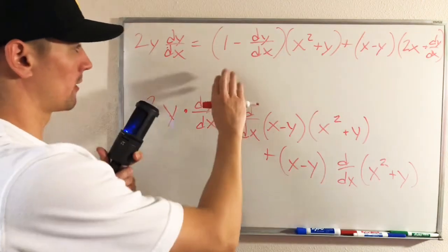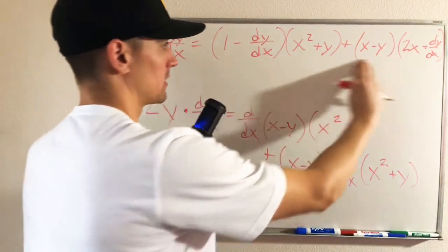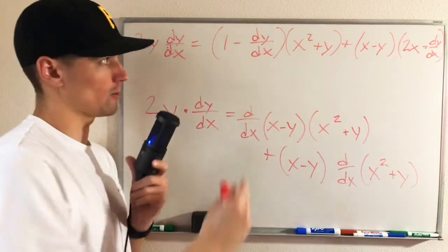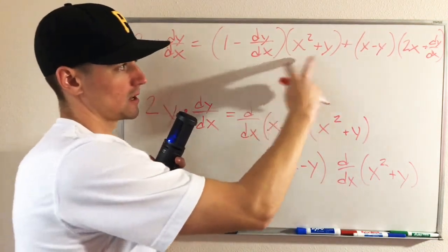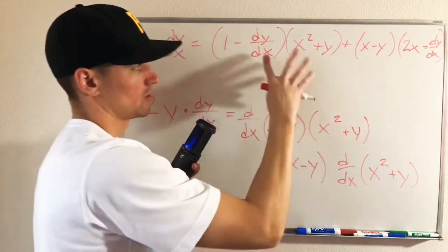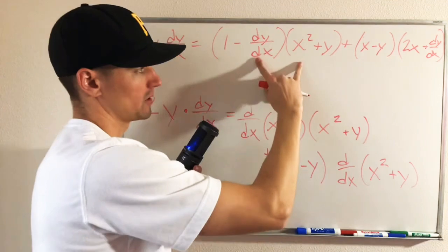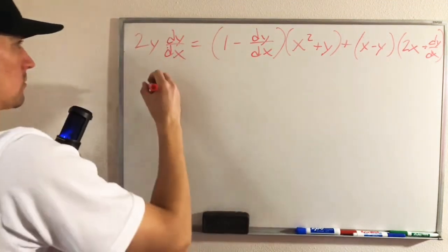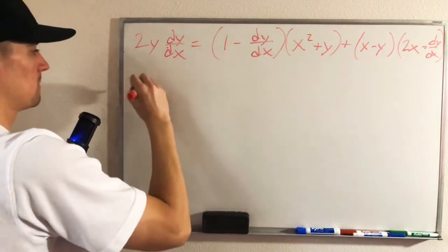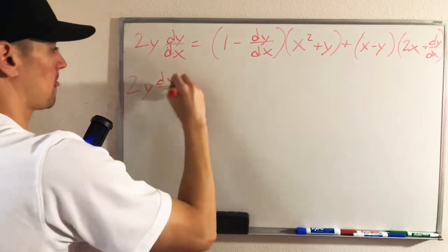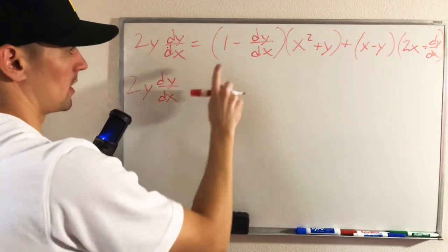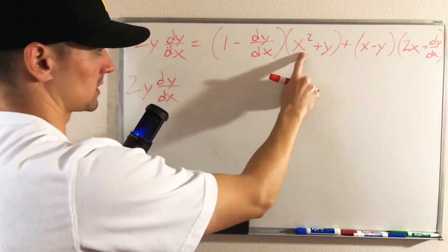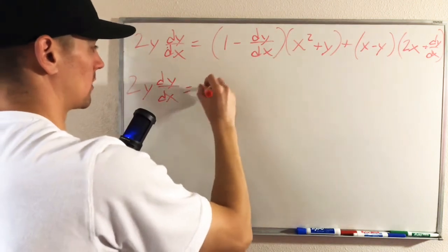So now what we want to go ahead and do is simplify this right side of our equation. To do that, we really just have to foil these two terms and then foil these two terms. We're going to keep the left side of our equation the same. And then foiling the first group out, we're going to get 1 times x squared, which is just going to be x squared.